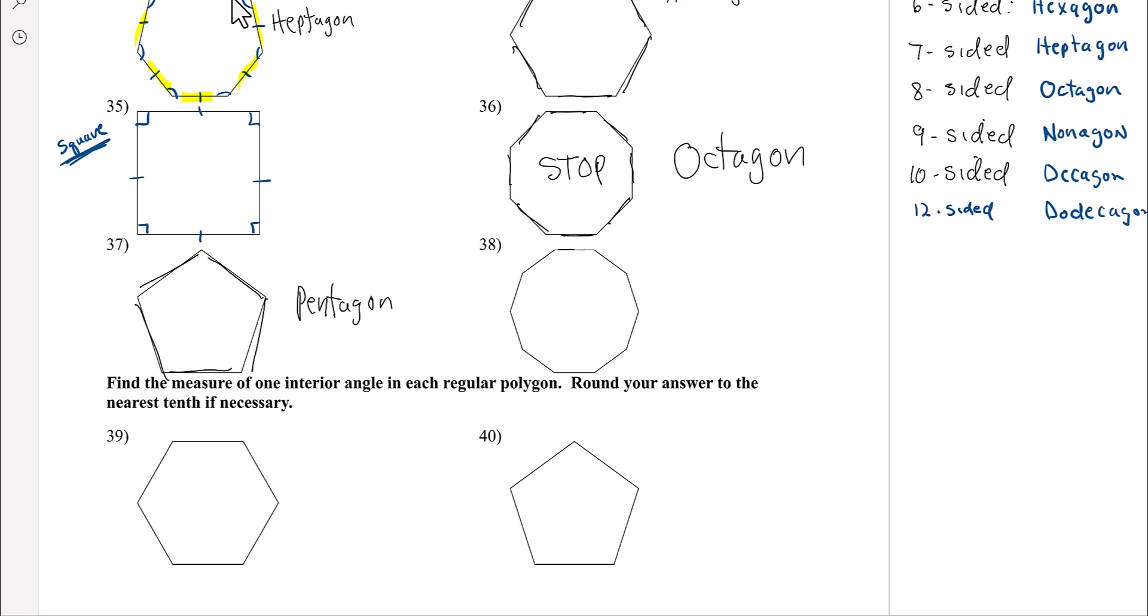And, this might be a decagon. One, two, three, four, five, six, seven, eight, nine, ten. Yep, ten-sided. That's a decagon.